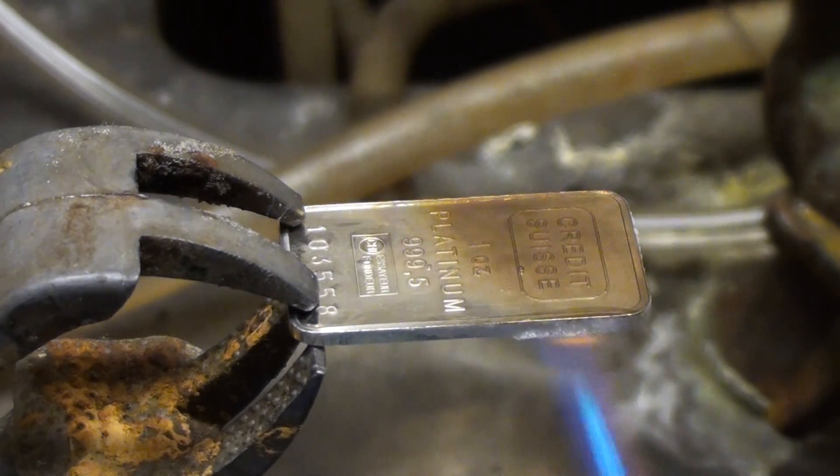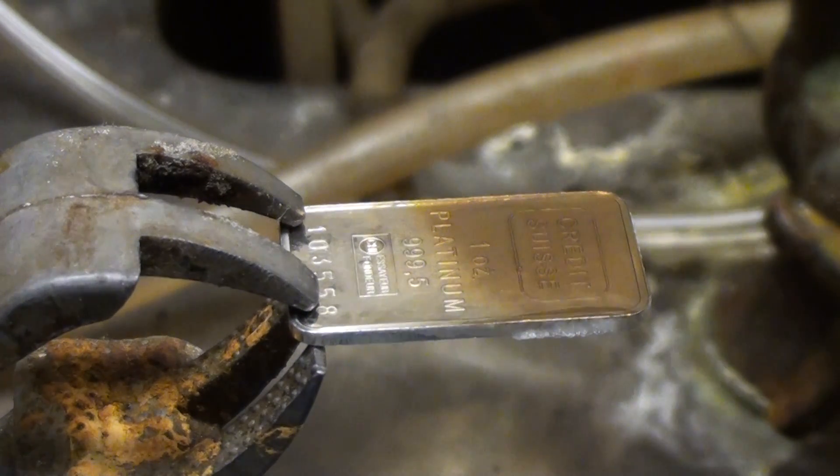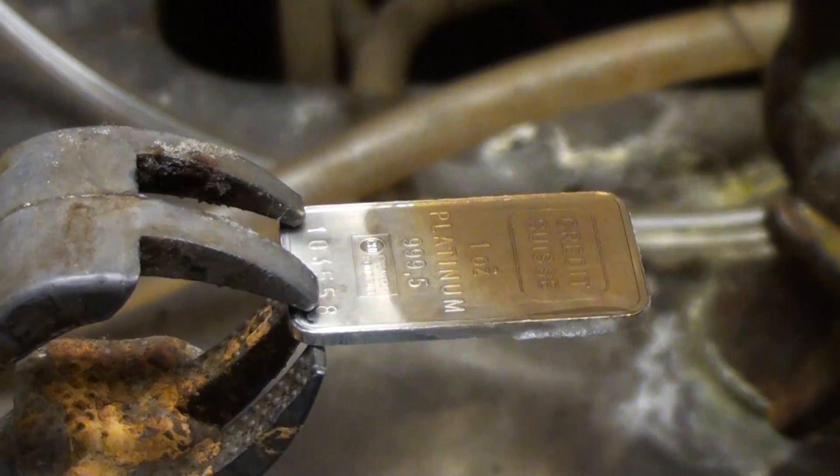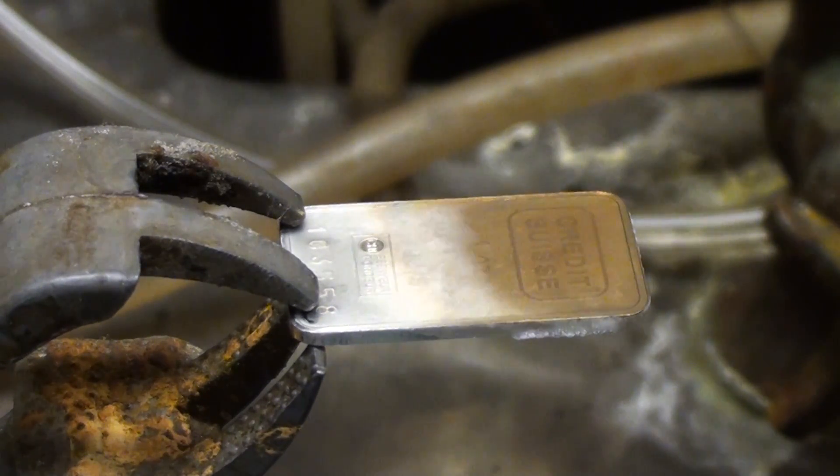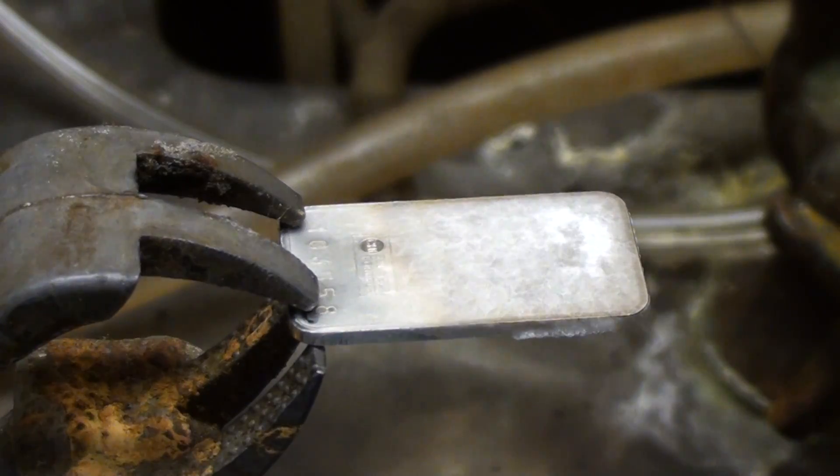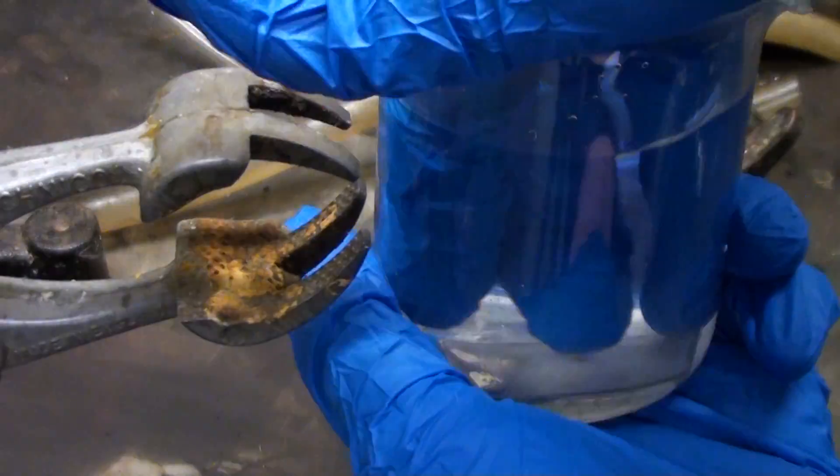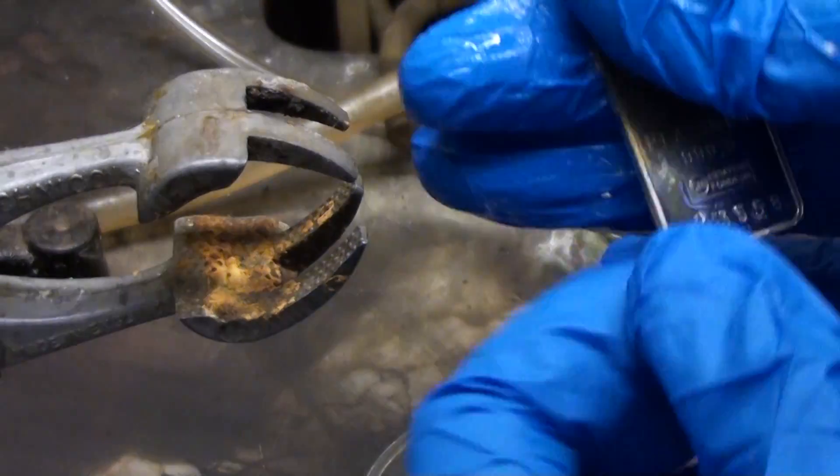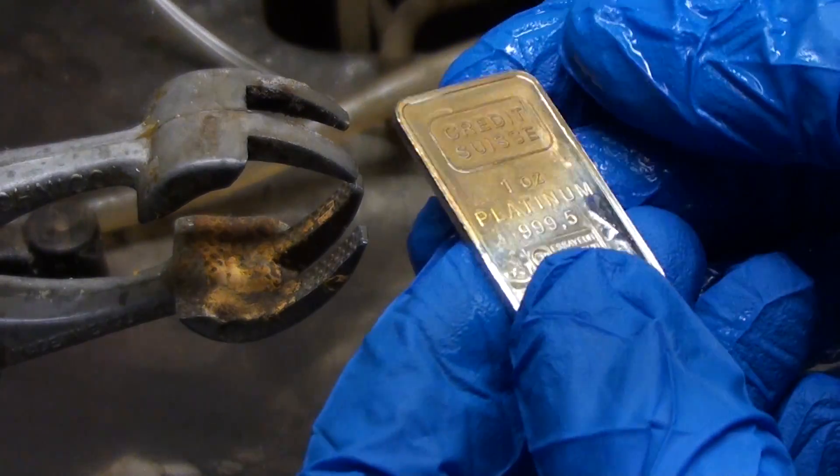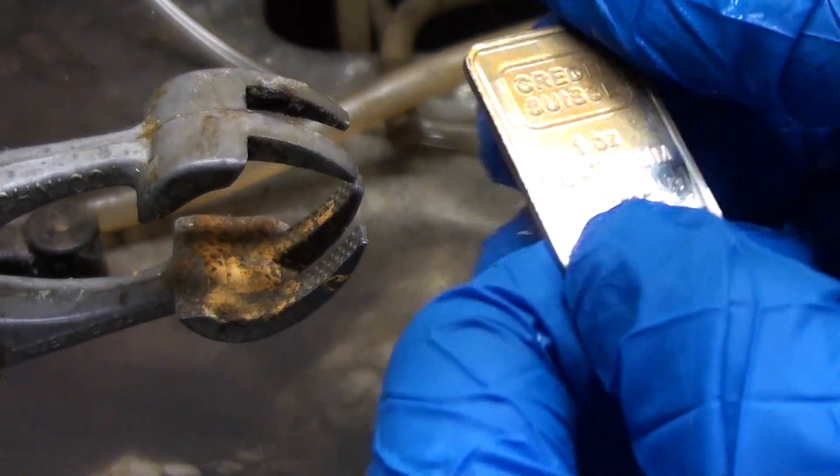Either the sodium hydroxide is turning brown or the platinum is. Let me let it cool and we'll remove the sodium hydroxide to be certain. The sodium hydroxide is solidifying so we'll need to dissolve it in water. Here we go, looks like the brown color is permanent. Platinum can be tarnished by molten sodium hydroxide.